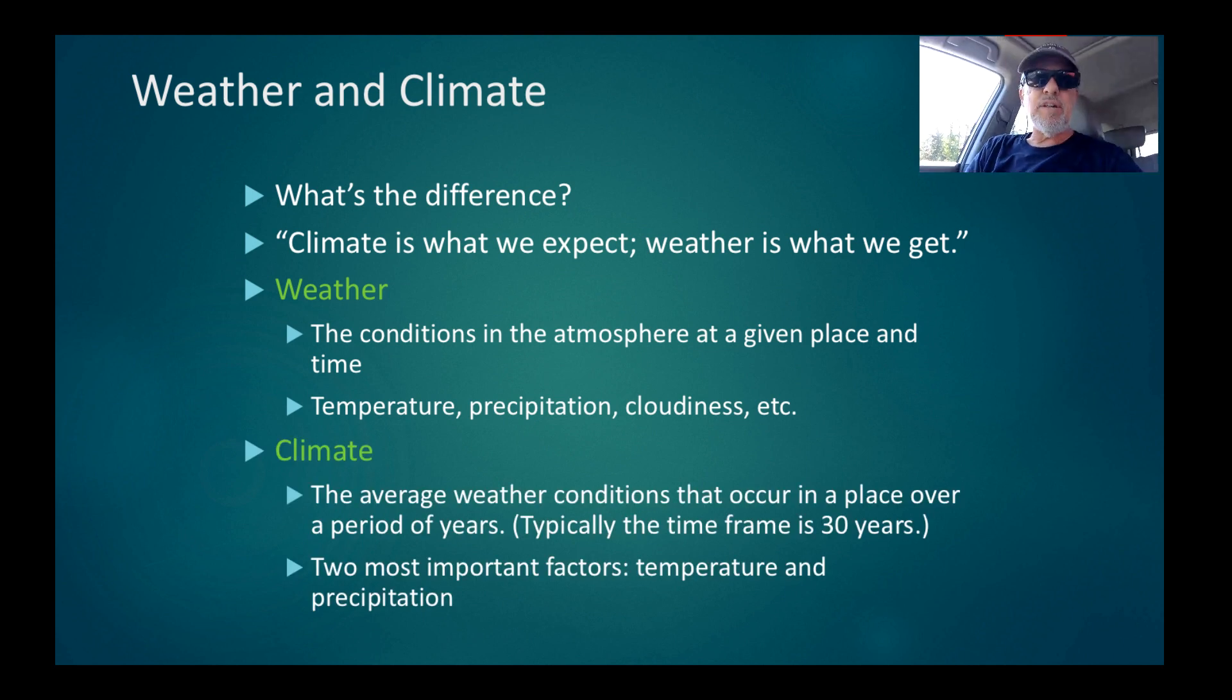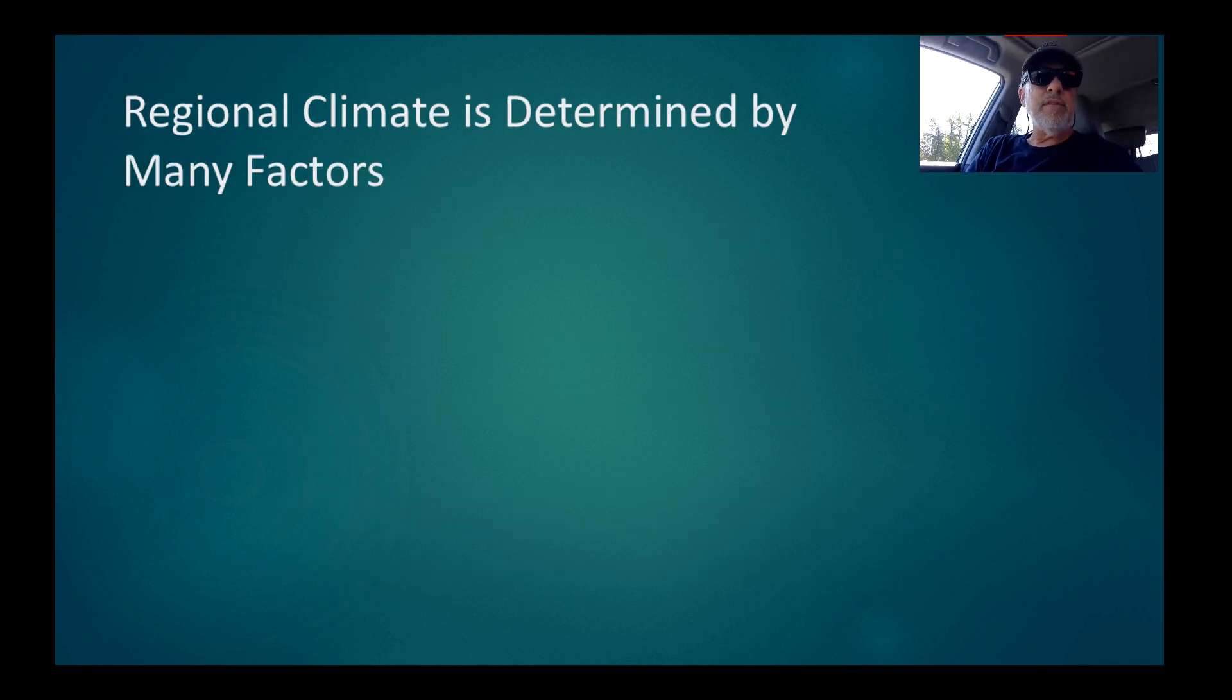In contrast, the climate is the average weather conditions that occur in a place over a period of years. And typically, that time frame is about 30 years. We want to know what was the average weather like at this time of year over a period of 30 years. And the two most important factors tend to be temperature and precipitation.